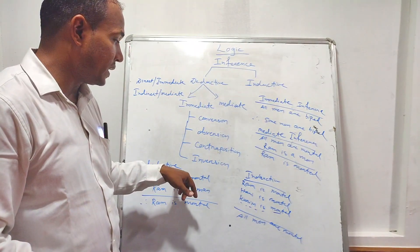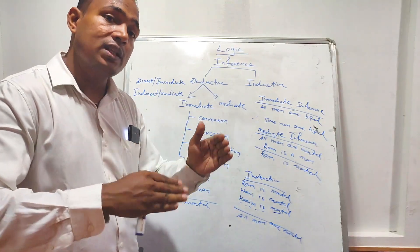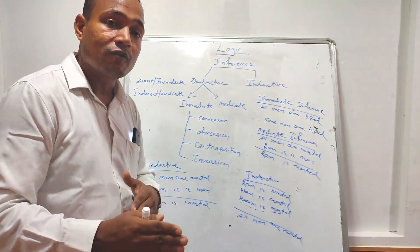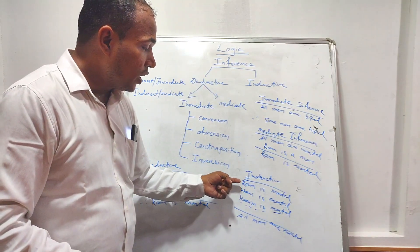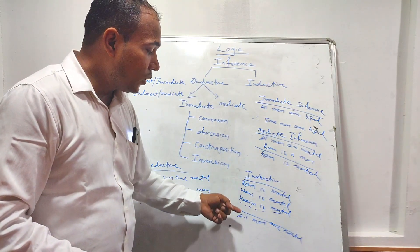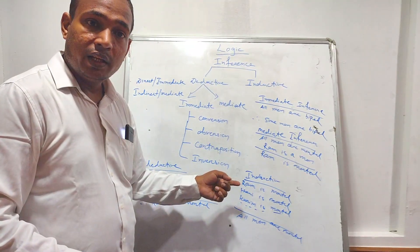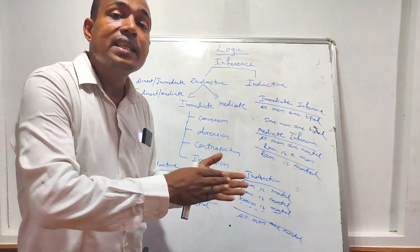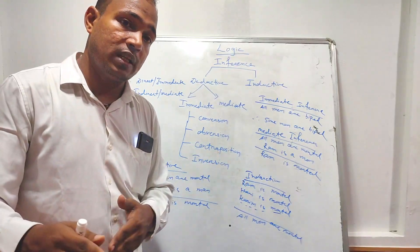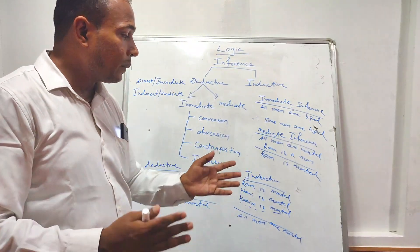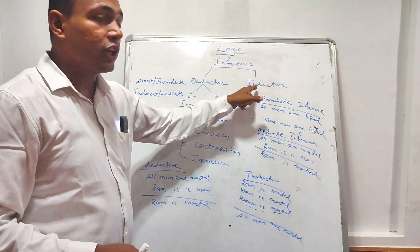In inductive inference, we pass from some to all — that is, from special to general, or from observed to unobserved. It is an ascending process.